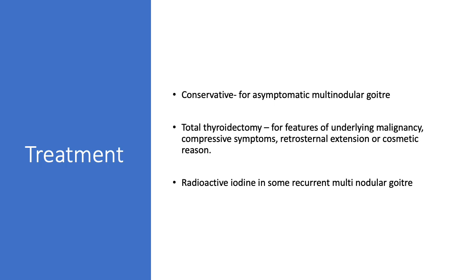If a multinodular goiter is asymptomatic, it is managed conservatively. Total thyroidectomy is considered if there are features of underlying malignancy, compressive symptoms, retrosternal extension, or cosmetic reasons. Radioactive iodine is used in some recurrent multinodular goiters, as surgery carries significant complications in that setting.